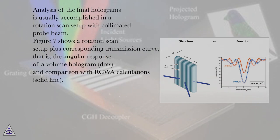Analysis of the final holograms is usually accomplished in a rotation scan setup with collimated probe beam. Figure 7 shows a rotation scan setup plus corresponding transmission curve, that is, the angular response of a volume hologram (dots) and comparison with RCWA calculations (solid line).